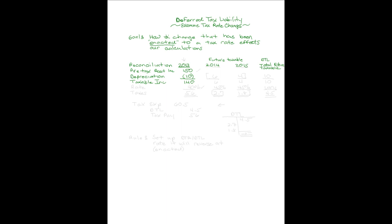That 10 difference reverses: in 2014, six of that 10 will reverse, and in 2015 the remaining four will, so that by end of period it will have all reversed out. As of 2013, the future taxable amounts are going to be 10. Let's assume our tax rate for 2013 is 40 percent, but for 2014 that additional 6 and 4 for 2015 will be subject to a 45 percent tax rate.